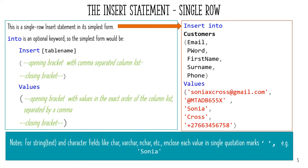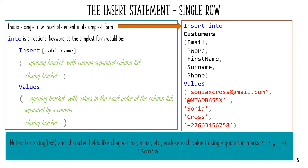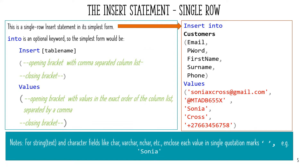Add the VALUES keyword, followed by an opening bracket. List the values you wish to add in the exact same order as the column list, separated by a comma. Close the value list with a closing bracket. For character and text fields, enclose each value in a single quotation mark.